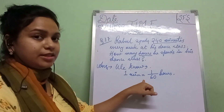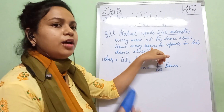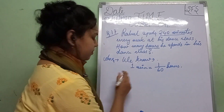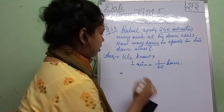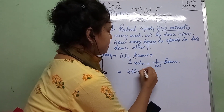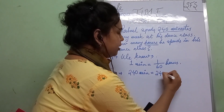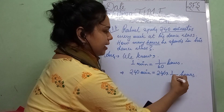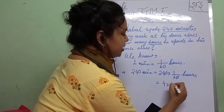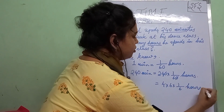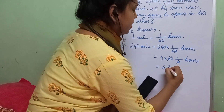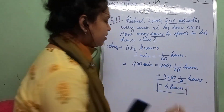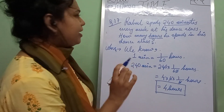One hour contains 60 minutes. Since minute is a smaller unit of time and hour is a larger unit of time, from small to big we divide. So 240 minutes is equal to 240 into 1 by 60 hours. The zeros cancel, giving 4 into 6 into 1 by 6 hours, and the 6s cancel — the result is 4 hours. So Rahul spends 4 hours in his dance class.